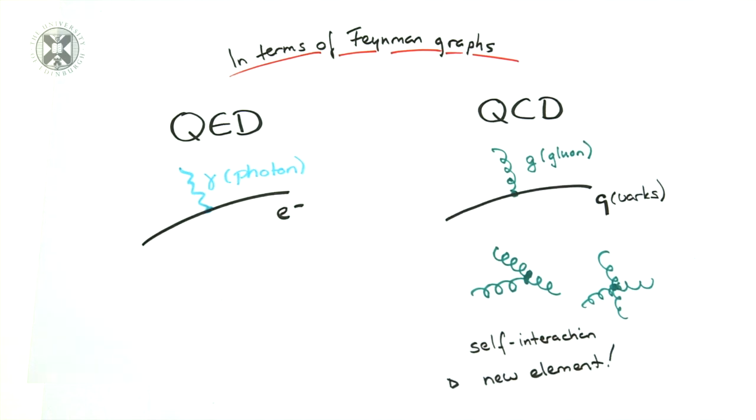The most important difference to QED is that the gluons also carry color charge, and therefore can interact with itself, which I have drawn in a set of so-called Feynman graphs. This is due to the color charge being more elaborate.